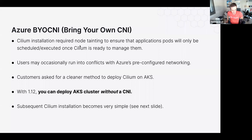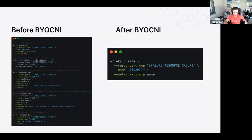Azure Bring Your Own CNI: Azure added a feature allowing AKS installation without any CNI pre-installed, massively simplifying Cilium installation. Before, you had to create node groups and taint nodes to ensure Cilium was installed before other pods scheduled. With Bring Your Own CNI, you simply install a new AKS cluster in that mode and install Cilium using the default installation path — no special workarounds required. Note: this is only available for new AKS clusters at this point.